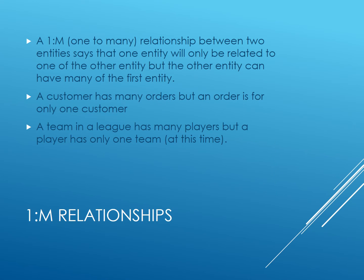In a one-to-many relationship, one entity can have many sales orders, but each sales order is for only one customer. Another example of one-to-many says that a team has many players, but each player plays for only one team at this time.